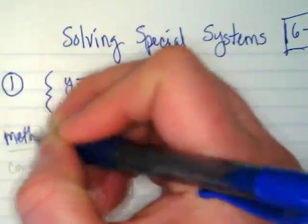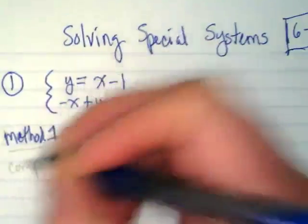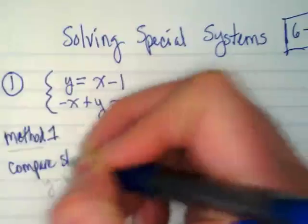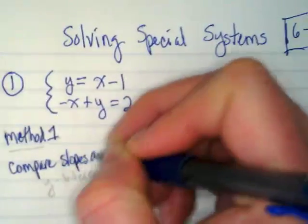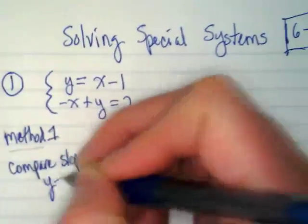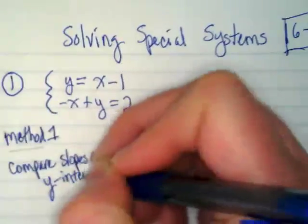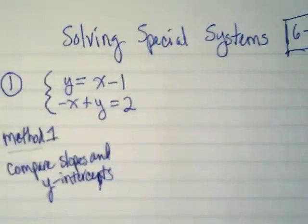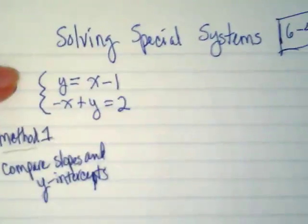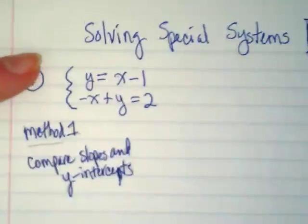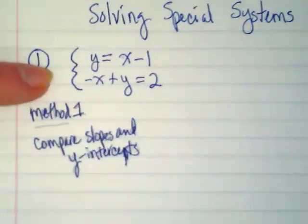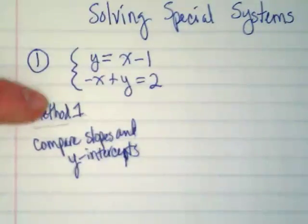Method one, and this is going to be the case for a couple of them. The first official way is to compare slopes and y-intercepts, which means that the equations have to be converted to slope-intercept form. The first one is already in that form. It's already in y equals mx plus b form. We need to convert the second one.